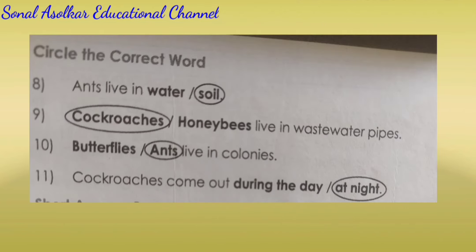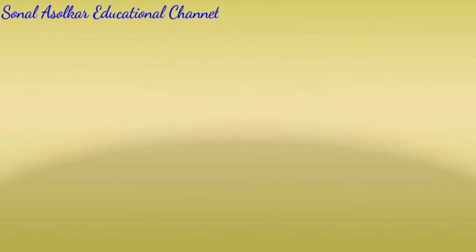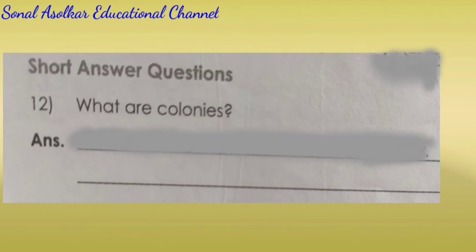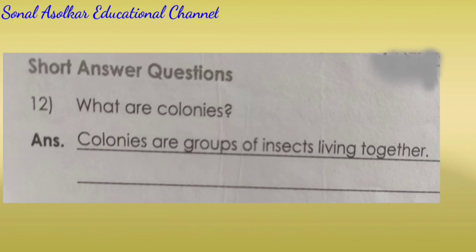Circle the correct word. Ants live in soil. Cockroaches live in wastewater pipes. Ants live in colonies. Cockroaches come out at night. Short answer questions. What are colonies? Answer: Colonies are groups of insects living together.